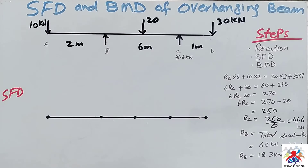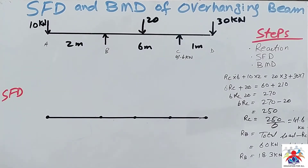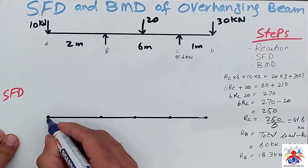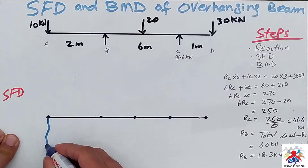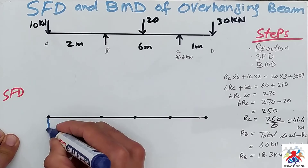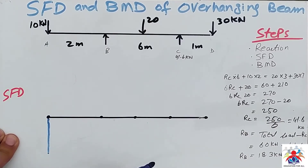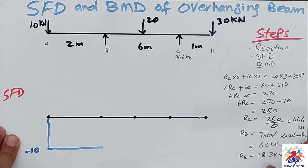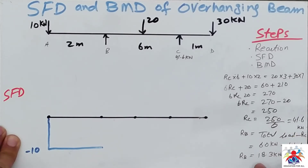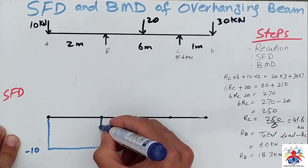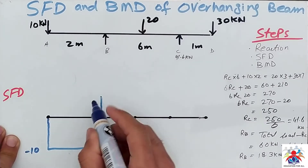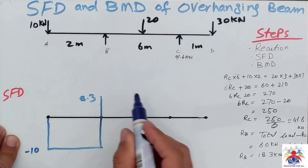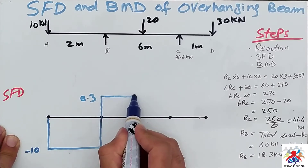Based on these numbers at RB and RC we can draw the shear force diagram. At point A, 10 kilonewton is acting downwards, so it is minus 10 kilonewton. Then we take a straight line to point B where RB is 18.3 kilonewton, so we go up, giving us 8.3.